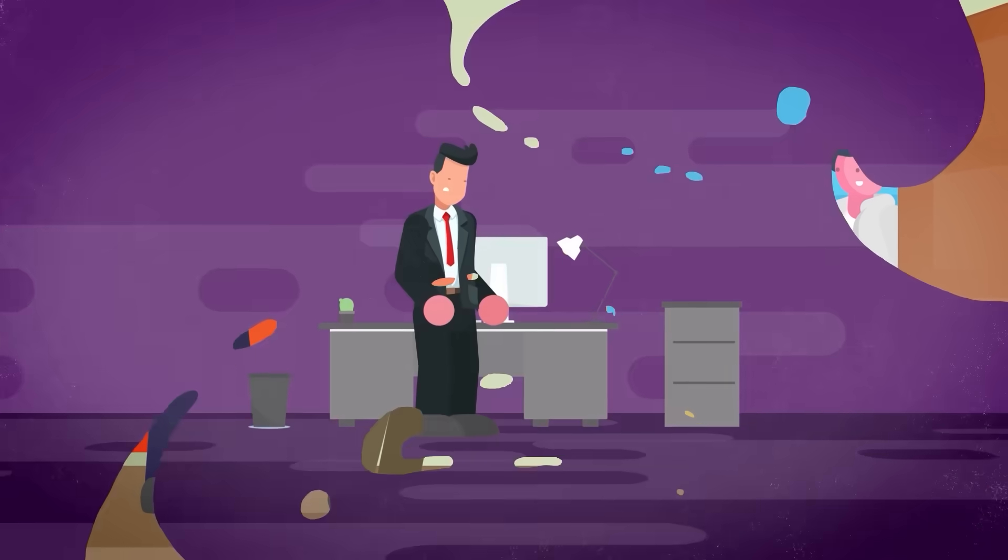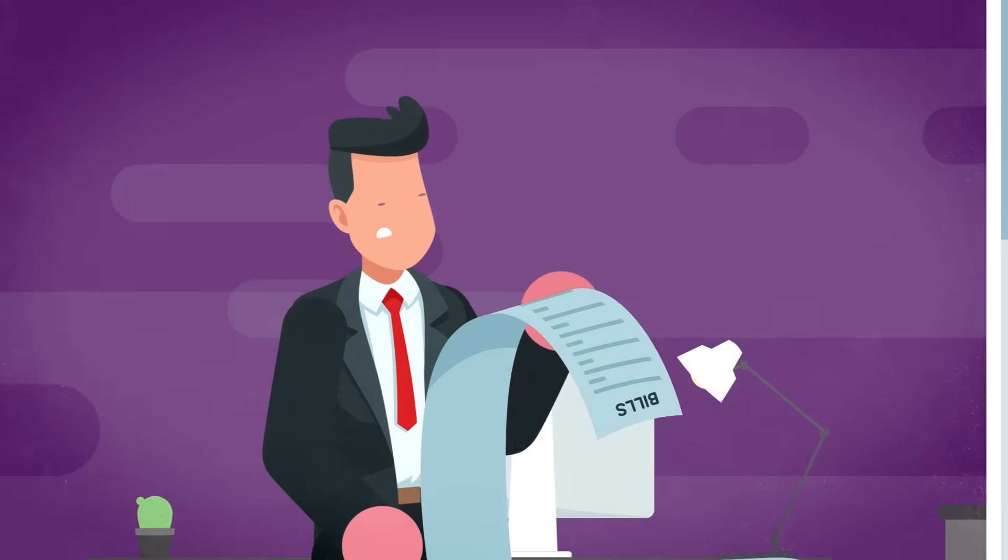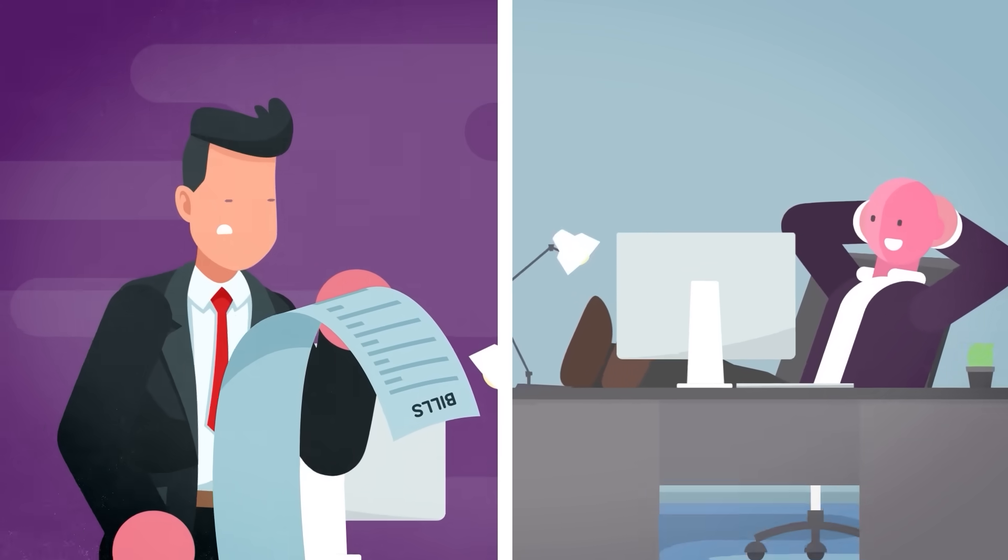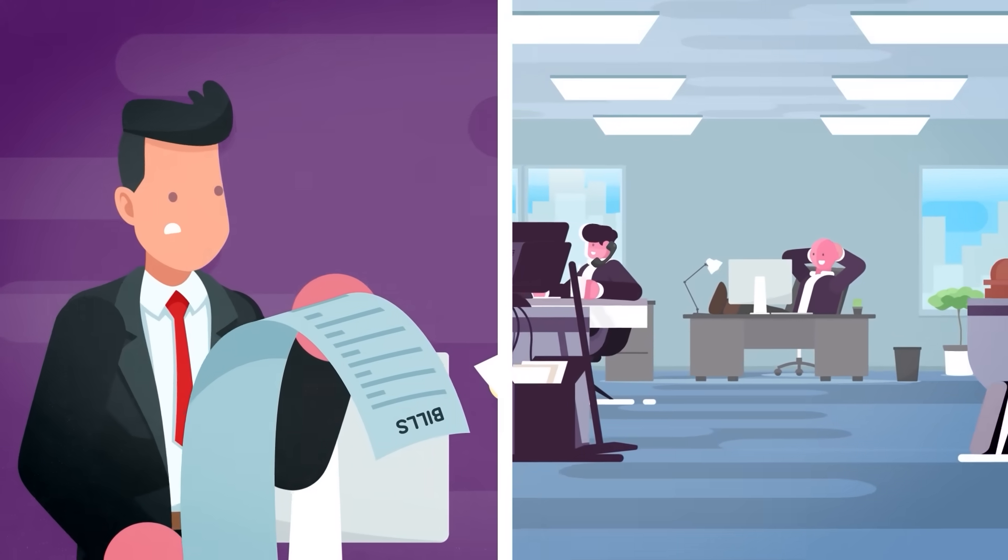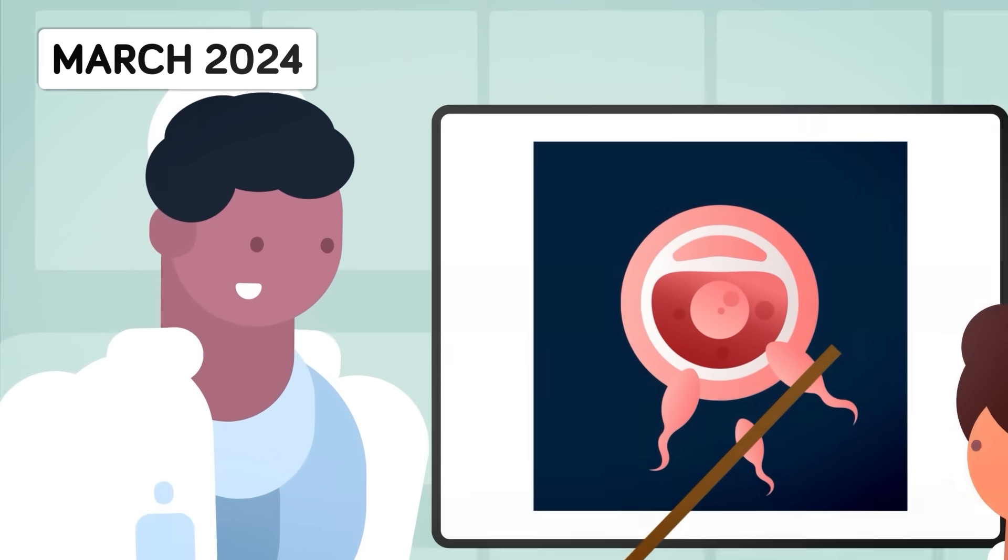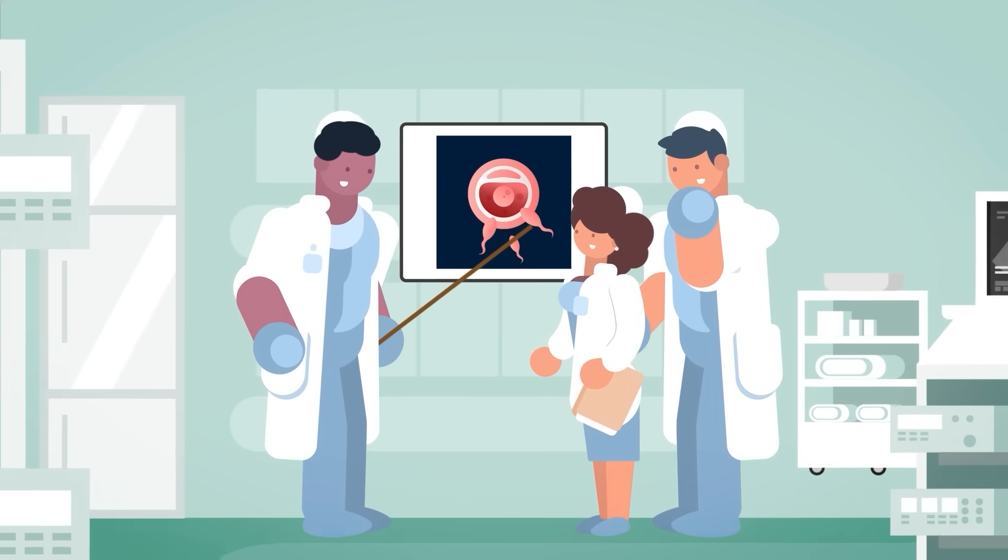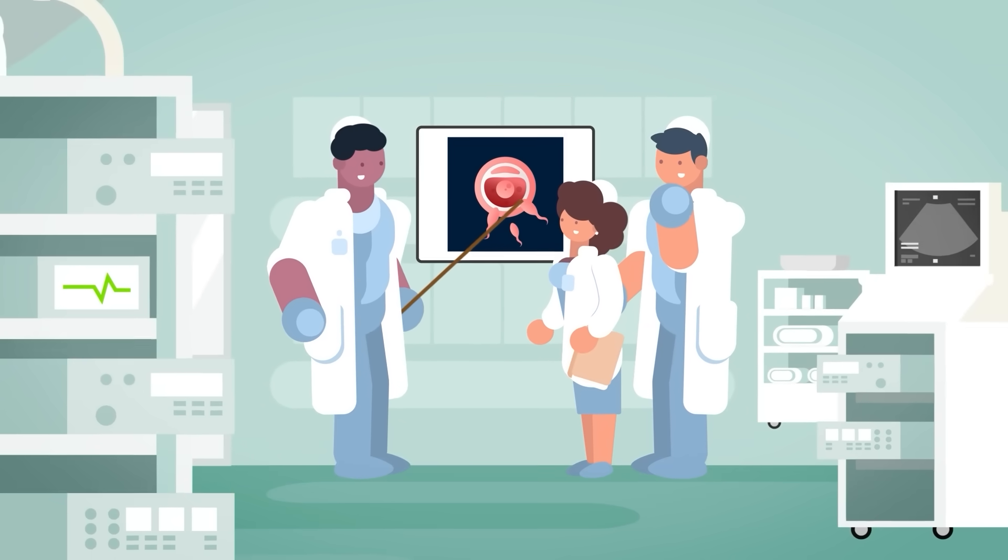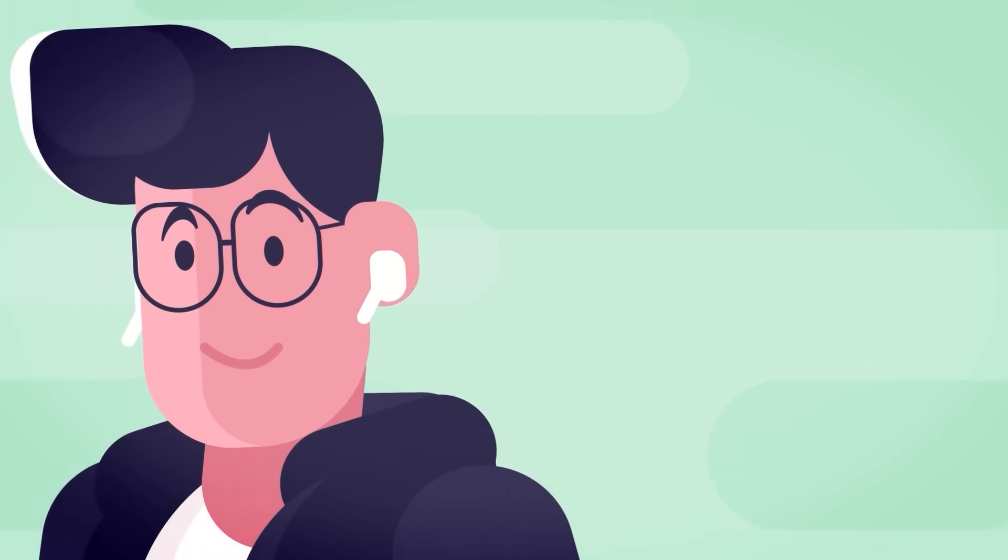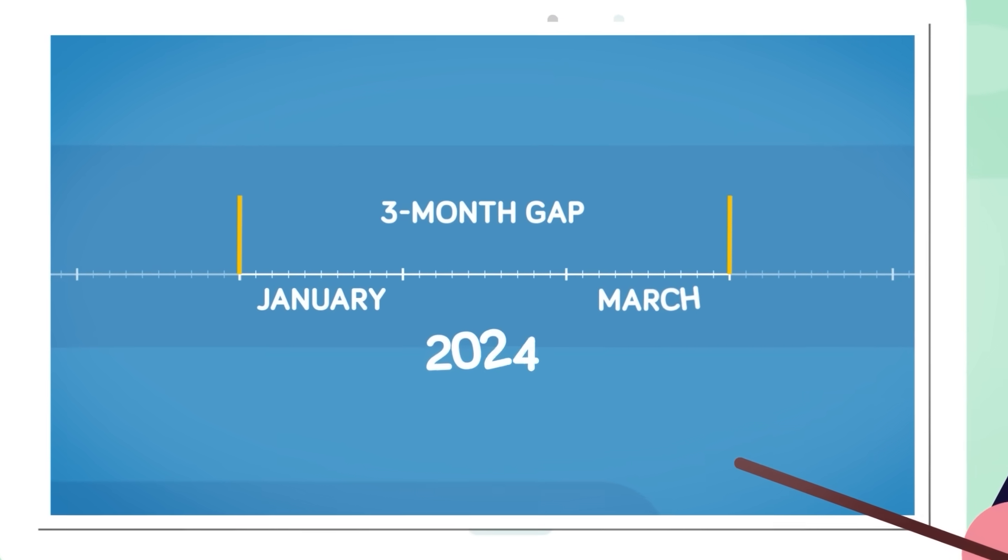It would be a difficult time for economies around the world, and certain businesses would probably not make it through the year with no babies. But the majority of bigger corporations would be fine coping. After women started becoming pregnant again in March of 2024, it would be clear things were going to return to normal in 2025. This would result in companies rehiring laid-off employees to ramp up production for the return to normalcy. So in reality, many businesses would only suffer from the three-month gap when there was no sign that any new babies would be born between January and March of 2024.